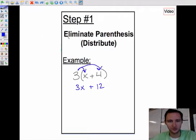Step one: eliminate parentheses, distribute. If your equation has parentheses in it, we use the distributive property to get rid of them. You see in the example 3(x+4) leaves us with 3x plus 12. That's step one.